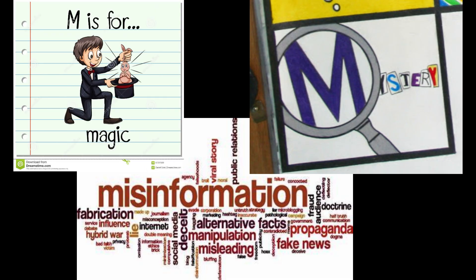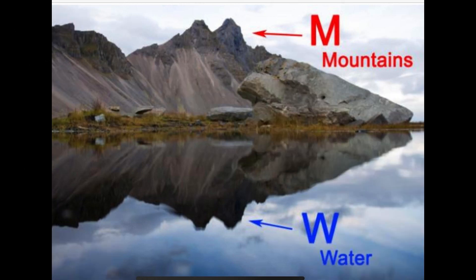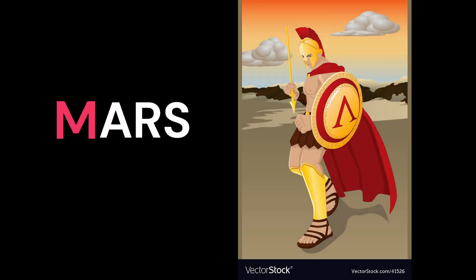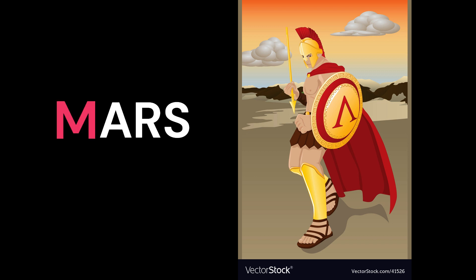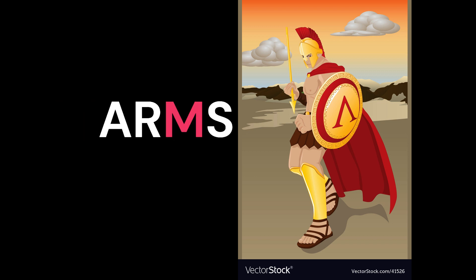We've also talked about the letter M and how it represents magic, manipulation, and misinformation — basically hiding the true meaning. Looking at the god Mars: you take the M and turn it upside down, because Mars is the god of wars. Now take that M, turn it upside down again and move it further down in the word, and you get 'arms' — a word for weapons used to fight wars.